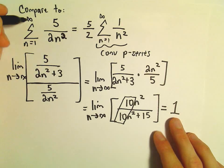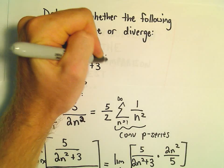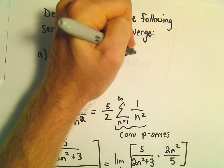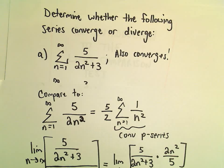So in this case, it would mean that our original series must also converge. This series also converges because we're comparing it to a series that converges.